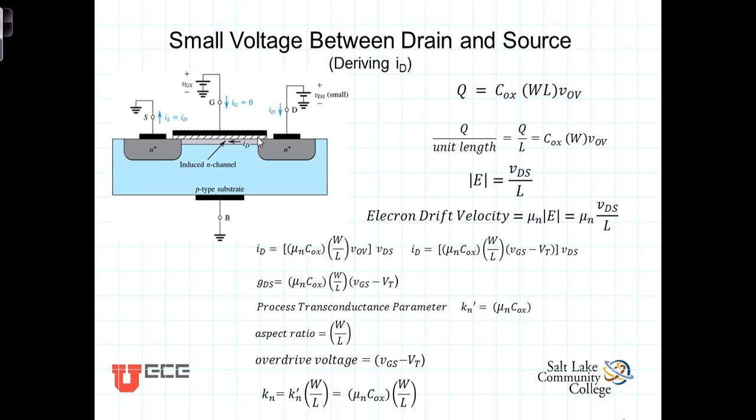Previously, we determined that the charge in the channel was given by this expression right here. Q, the charge in the channel is equal to that. And we can then divide Q by the length of the channel to get the charge per unit length, or that. Now, the voltage VDS establishes an electric field, an E field in the channel that's equal to the voltage divided by the length of the channel.